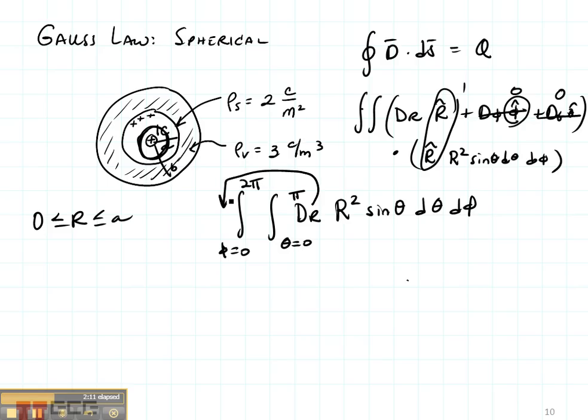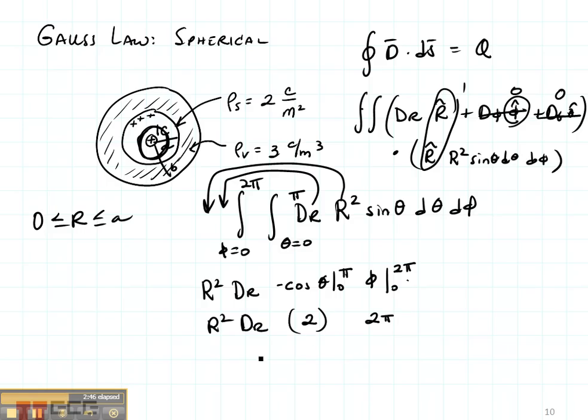Well this can come outside because it's constant every place on my sphere, and this can come outside because it is not part of the variables of integration. So I get r² dr. When I integrate sine, I get the cosine from 0 to π. And when I integrate φ, I get φ from 0 to 2π. This gives us a value of 2, this gives us a value of 2π, and this is r² dr. And I just made one little mistake here. This is minus cosine and not cosine. That's why we end up with a 2 here. So I get 4π r² dr.